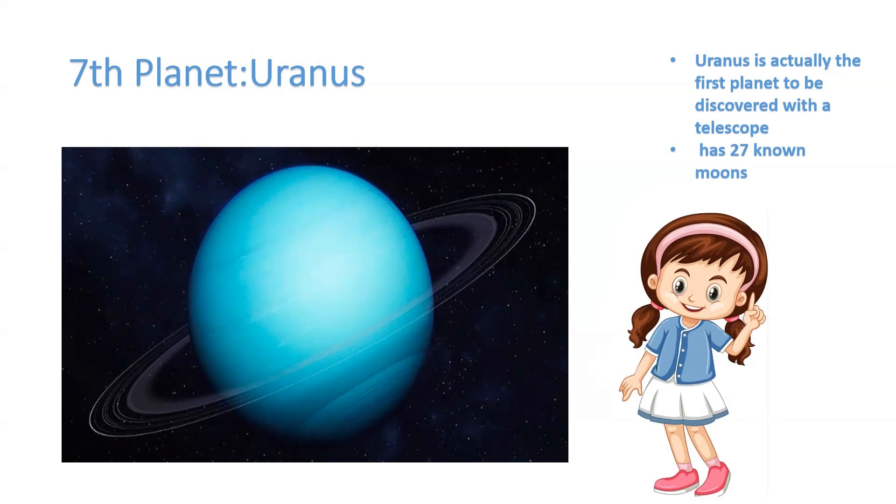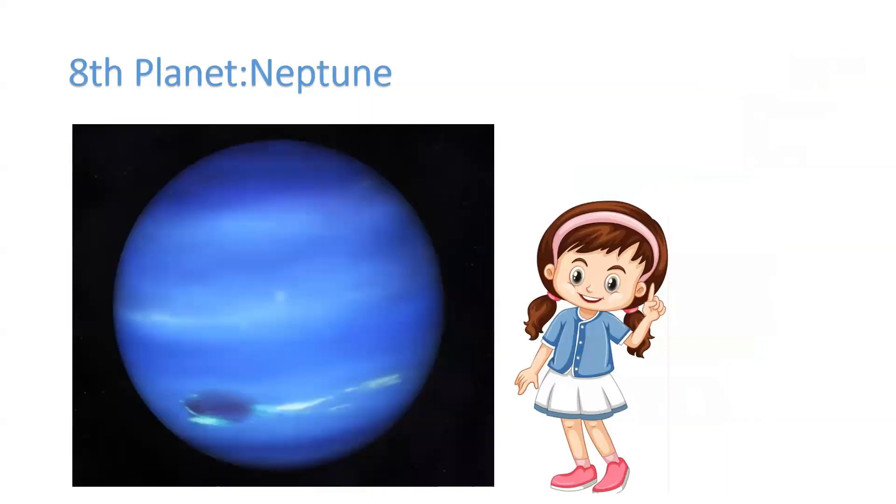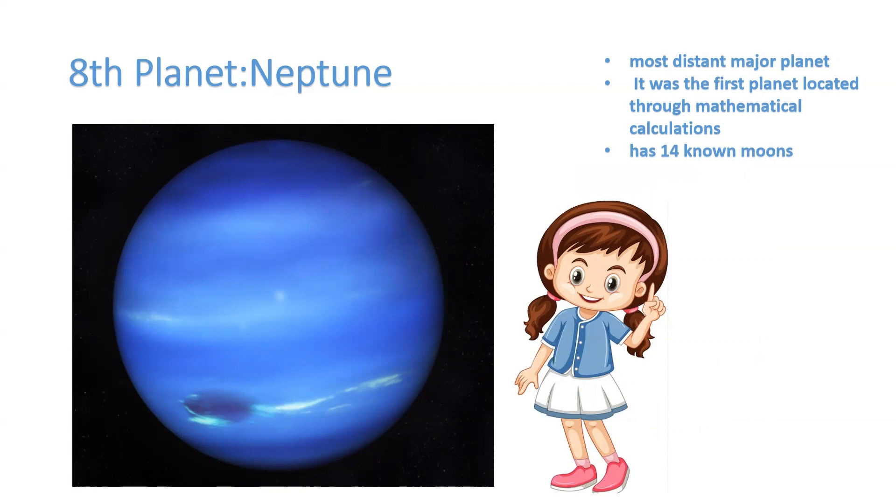Now, let's move to the last planet, Neptune. Neptune is a dark blue and purplish color. You can see this pretty picture of Neptune. Did you know Neptune is the most distant major planet and it was the first planet located through mathematical calculations? It has 14 known moons.